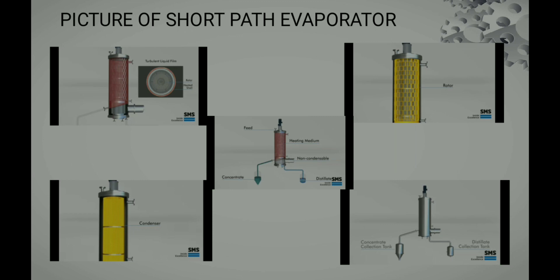The internal condenser starts working by the supply of water inlet and outlet. That vapor converts into a liquid, which we call the distillate, and the distillate goes to the distillate outlet nozzle. The remaining concentrated liquid goes to the concentrated container or nozzle, and the remaining vapor goes out through the vacuum outlet. That's all about the working of the short path evaporator with the pictures.